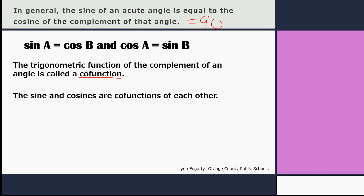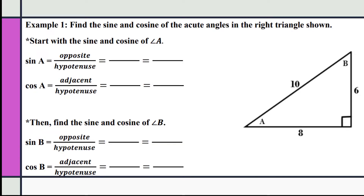The trigonometric function of the complement of an angle is called the co-function, so the sine and cosine of an angle are co-functions of each other. Let's look at this first example where we want to find the sine and cosine of the acute angles in this right triangle.